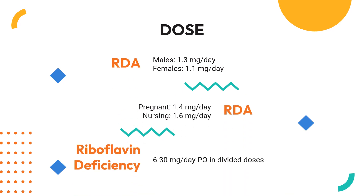Dose — RDA: Males 1.3 mg per day, Females 1.1 mg per day, Pregnant 1.4 mg per day, Nursing 1.6 mg per day. For riboflavin deficiency, supplementation is indicated for adults with riboflavin deficiency syndromes: 6–30 mg per day orally in divided doses.